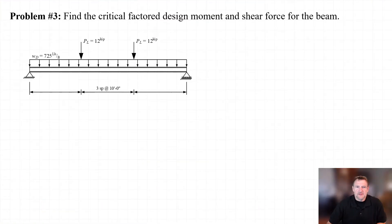For this problem, we are asked to find the critical factored design moment and shear force for the beam shown. It's a simply supported beam with a span length of 30 feet subjected to a dead load consisting of a uniformly distributed load of 725 pounds per linear foot and a live load consisting of two point loads applied at the third points of the beam, each with a magnitude of 12 kips.